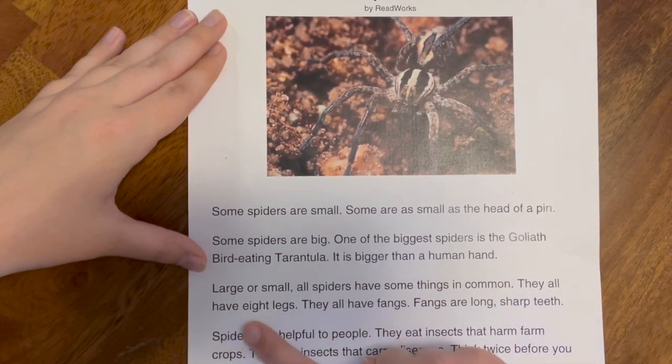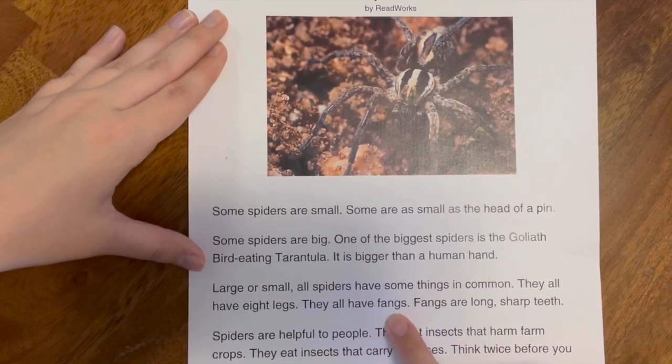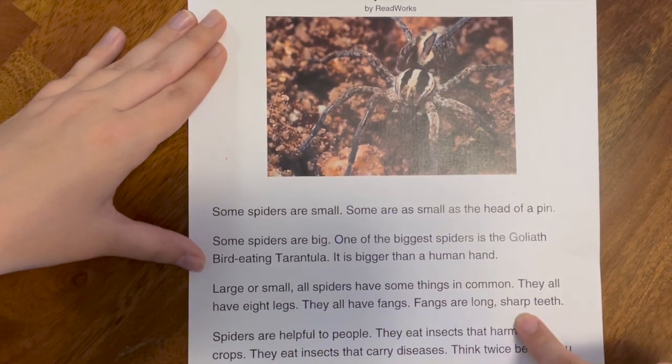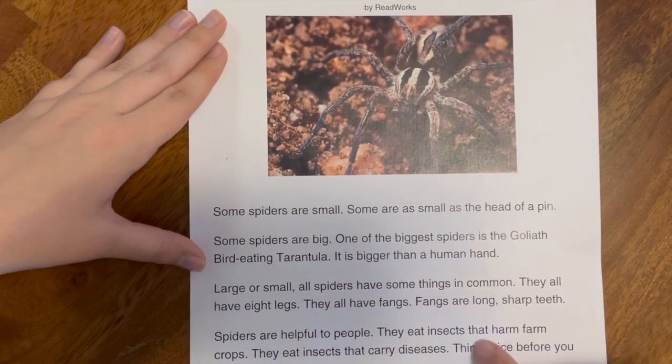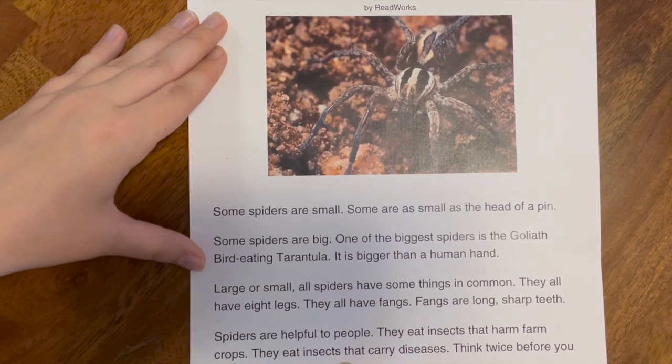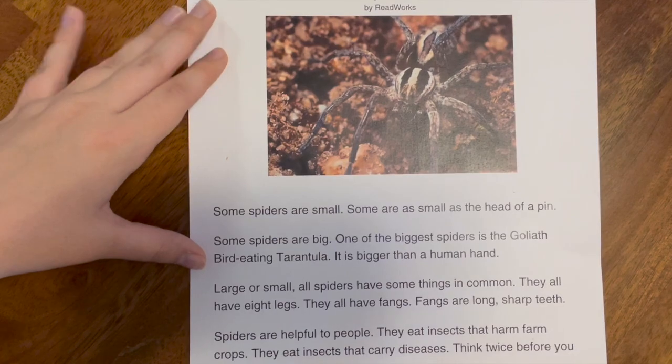They all have fangs. Fangs are long sharp teeth. Spiders are helpful to people. They eat insects that harm farm crops. They eat insects that carry diseases. Think twice before you squash one.